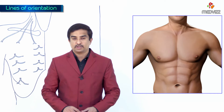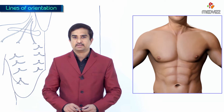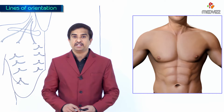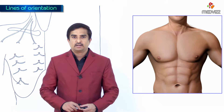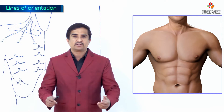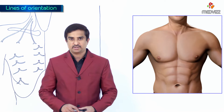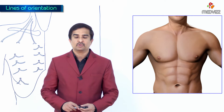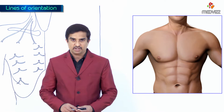Welcome to the gross anatomy of the thorax. Whenever we describe the surface features of the anterior aspect of the thorax, we always describe them with the lines of orientation. In this particular module, we are going to discuss what the lines of orientation are.